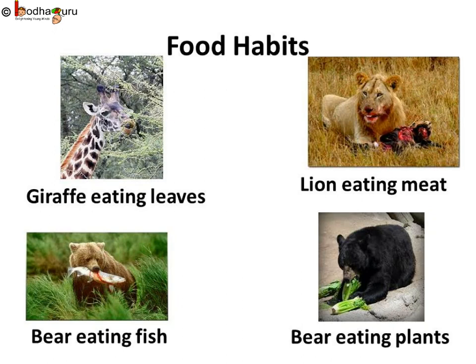Like us, animals do eat different kinds of food. Look at the picture. The giraffe is eating leaves. The lion has already killed some animal and is enjoying his royal meal now. The bear is holding fish in its mouth. And what is this? The bear is eating plants here. Like a bear, some animals eat both plants and other animals too.